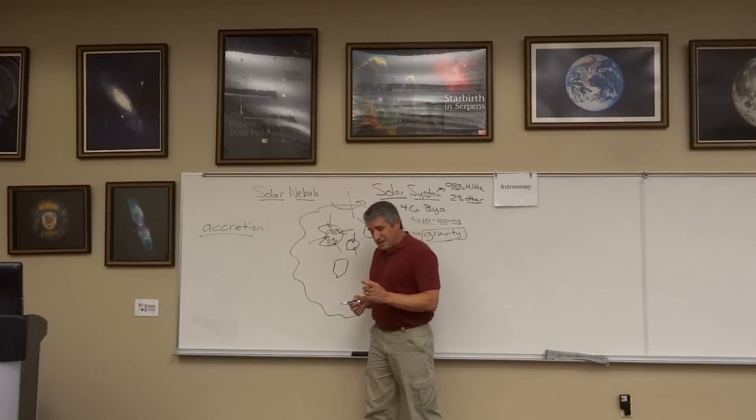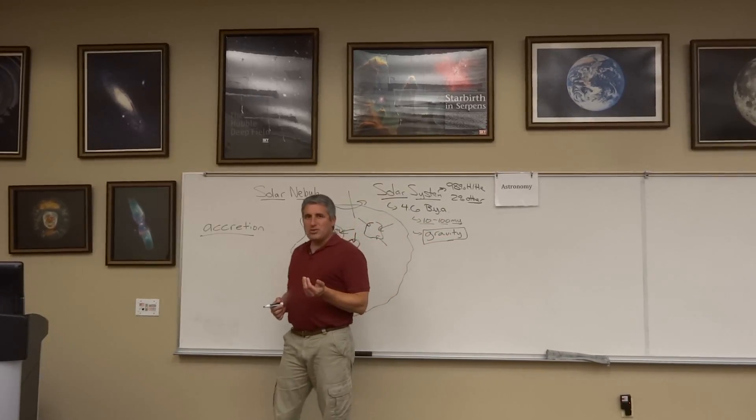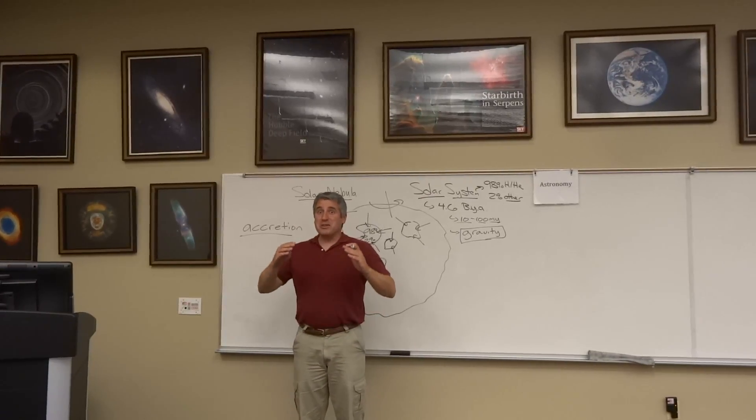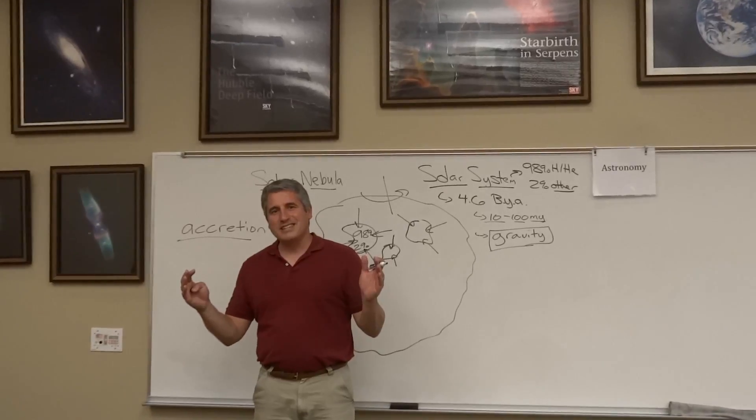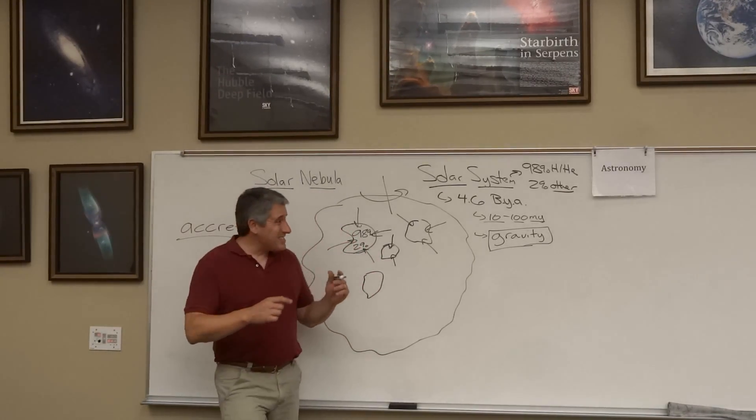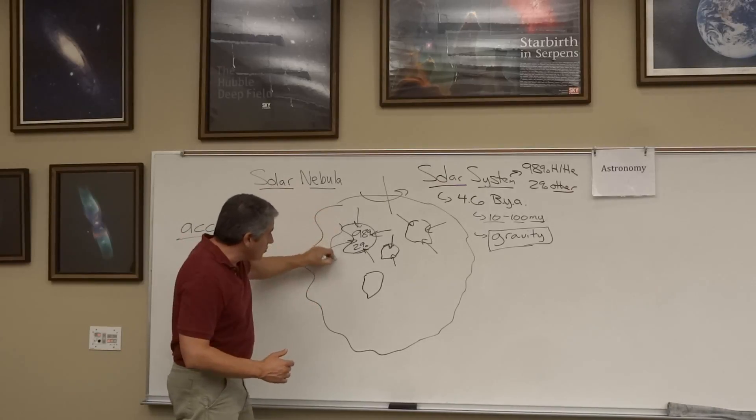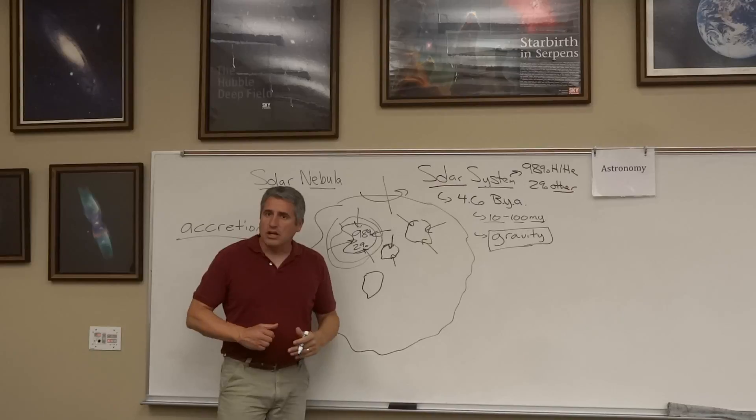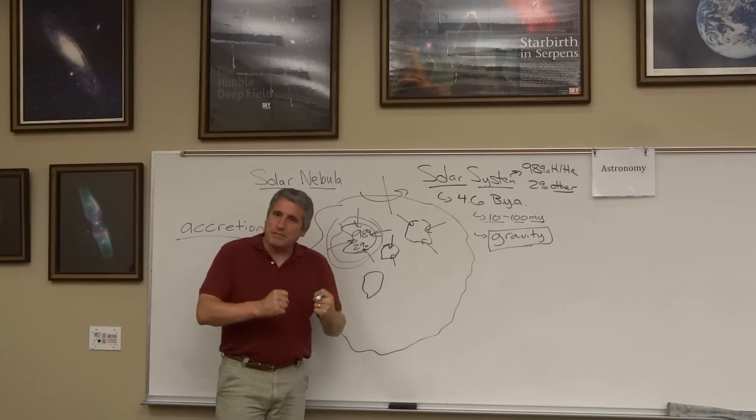Have you ever built a snowman? You start with a small clump of snow and it takes forever to build a big one as you roll it along. You start with a good-sized chunk and, boy, that thing grows fast. That's the same thing that's going on here. And as this process of accretion grows these big clumps bigger and bigger, faster and faster, you're condensing the material together.